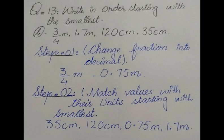Step 2: Match values with their units. We have 35 centimeter or 120 centimeter - which is smaller? 35. So 35cm will be first, then 120cm. For the meters values, 0.75 is small and 1.7 is big. So we go from smallest to largest: 35cm, 120cm, 0.75m, 1.7m.